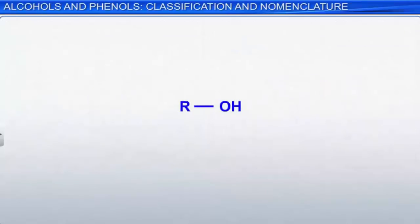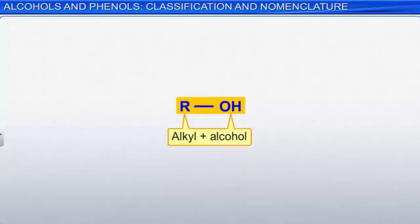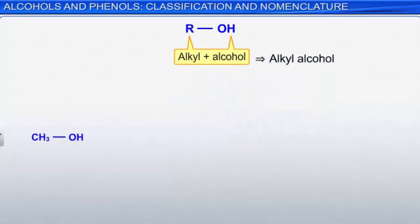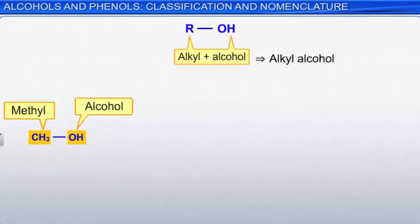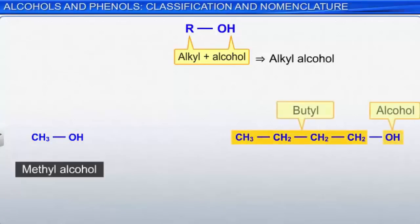Now that we understand the classification of alcohols, let's turn to their nomenclature. The common names of alcohols are derived from the name of the alkyl group with a -yl ending, plus the word alcohol. For example, the alcohol with the formula CH3OH is commonly called methyl alcohol — it contains only one carbon, which corresponds to a methyl group. The molecule on the right has a 4-carbon chain in a straight line, corresponding to n-butyl alcohol, where n indicates an unbranched carbon chain.